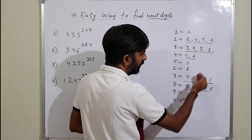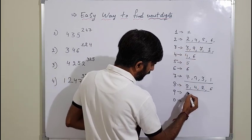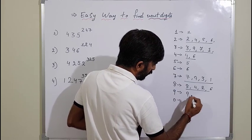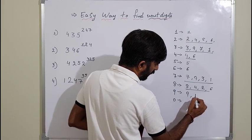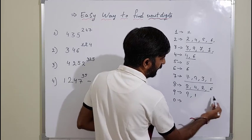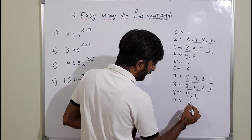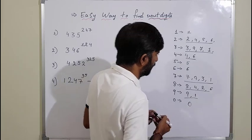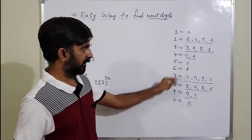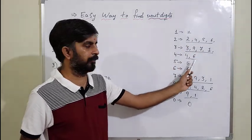For 9: 9 raised to 1 gives unit digit 9, and 9 squared gives 81, so unit digit 1. So you will only get 9 and 1 alternating in any power of 9. And for 0, the unit digit will always be 0. These are the fixed values that can appear at the unit place.